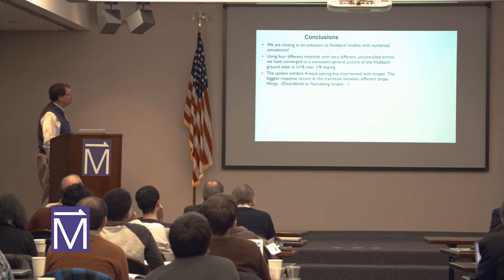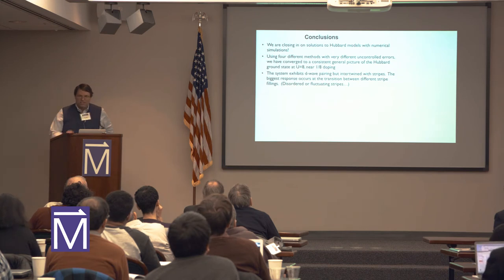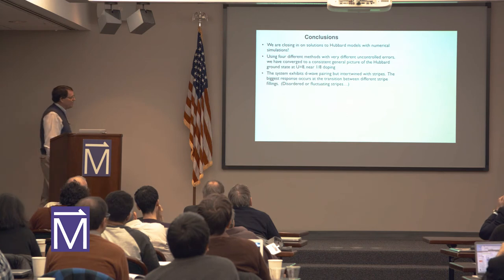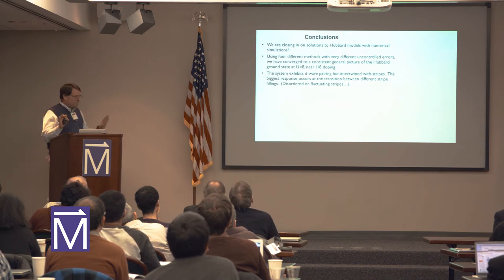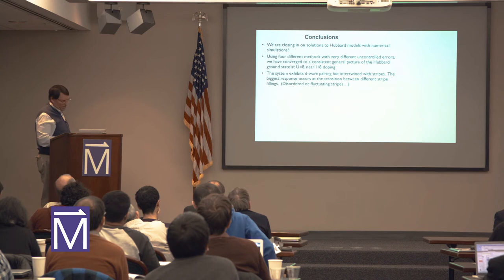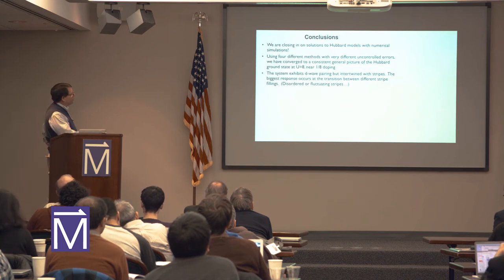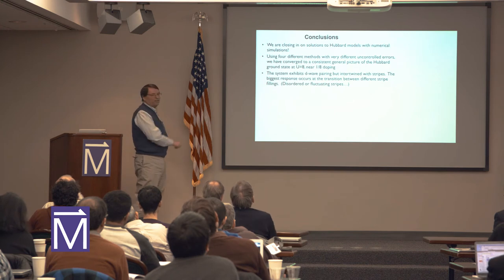To conclude, we think we're closing in on solutions to Hubbard models with numerical simulations. This was just the Hubbard model without extra parameters, without trying to fit the T-primes to DFT — it's limited in that way and we need to explore the broader phase diagram. But at least if we pick a particular point and work hard, we can do a pretty good job solving these systems. With the four different methods, we think we've converged to a consistent general picture of the Hubbard ground state near U=8 and near 1/8 filling. The system exhibits D-wave pairing intertwined with stripes, and the biggest response occurs at the transition between stripe fillings.